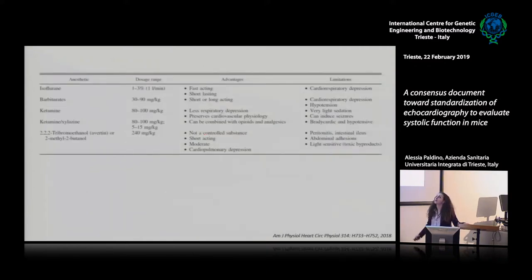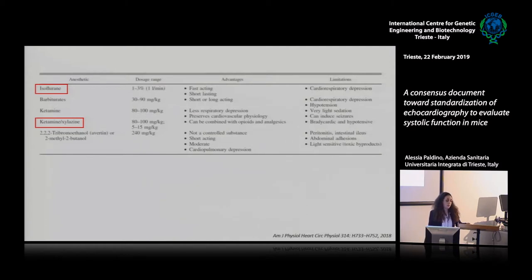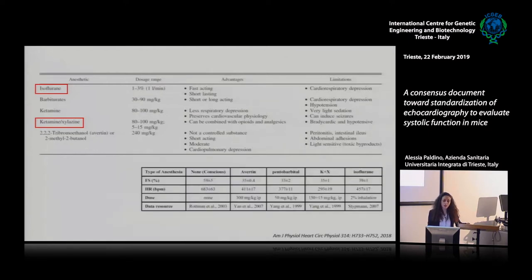This is a list of the main anesthetics used in the laboratory setting. Isoflurane and ketamine plus xylazine are the most used. Ketamine plus xylazine is the anesthetic of choice for surgeries. But in the last years, many studies have demonstrated a significant cardio-depressant effect of this anesthetic that makes it unacceptable for echocardiographic evaluation of systolic function. This cardio-depressant effect is higher than other anesthetics, as you can see from this table.